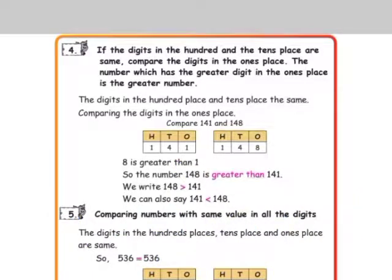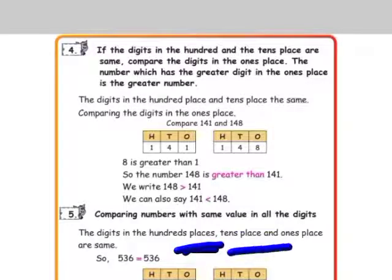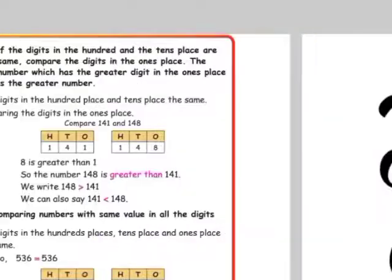The fifth case: comparing numbers where all the digits are the same — the hundreds, tens, and ones places are all equal. In that case, we use the equal to symbol. So 536 is equal to 536. Thank you.